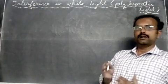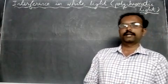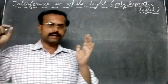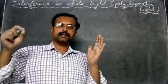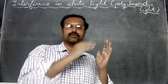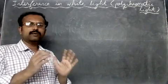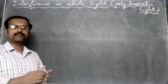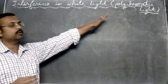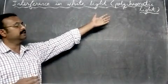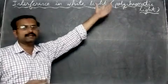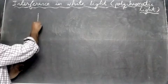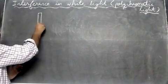We have already seen Young's double slit experiment, where there are two slits and light of a particular wavelength passes through to form interference fringes. Now let's see what happens if in Young's experiment we use a white source of light — that is, polychromatic light, meaning it has many colors.